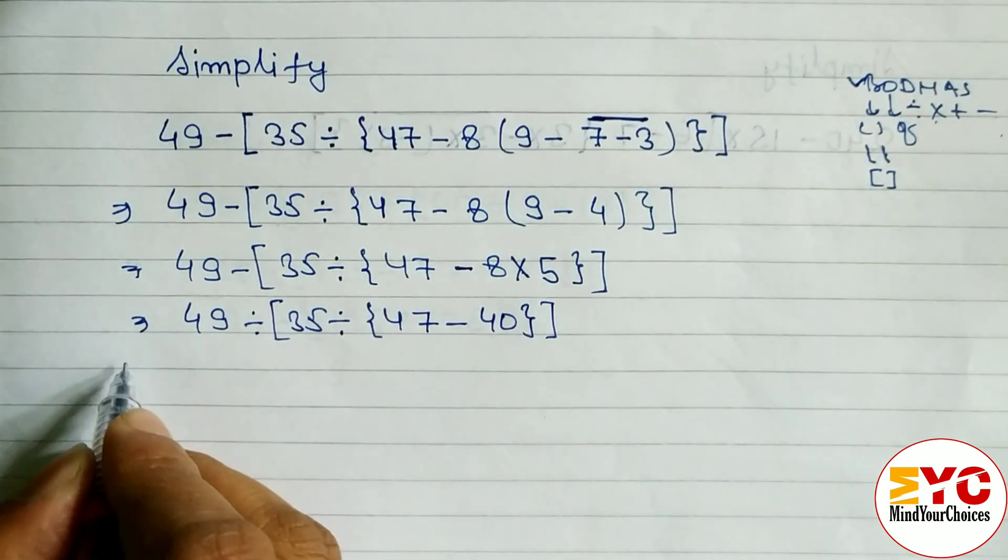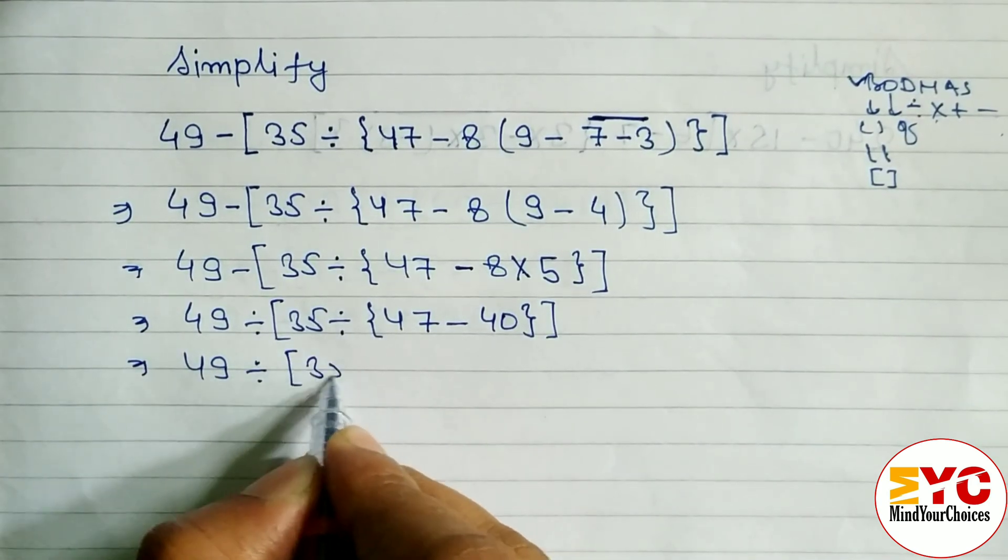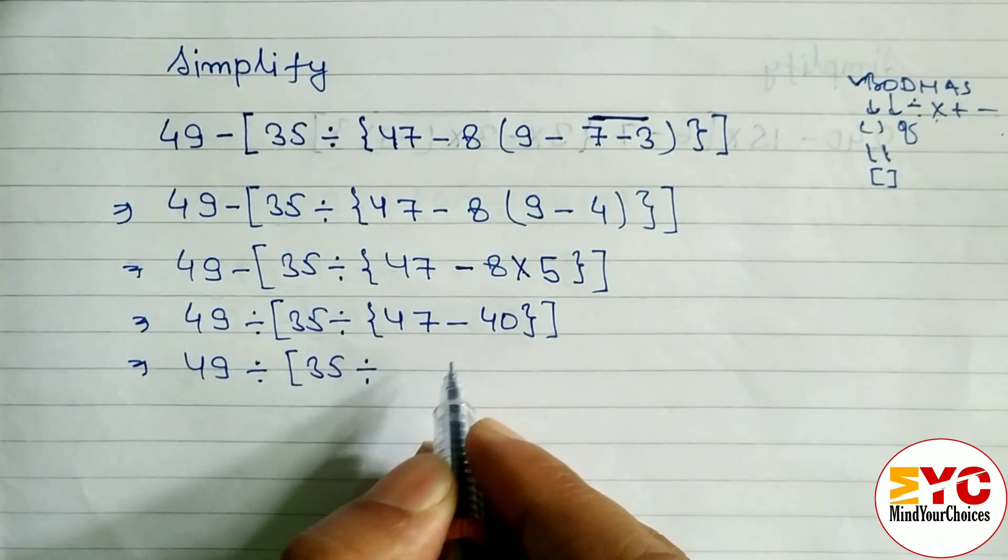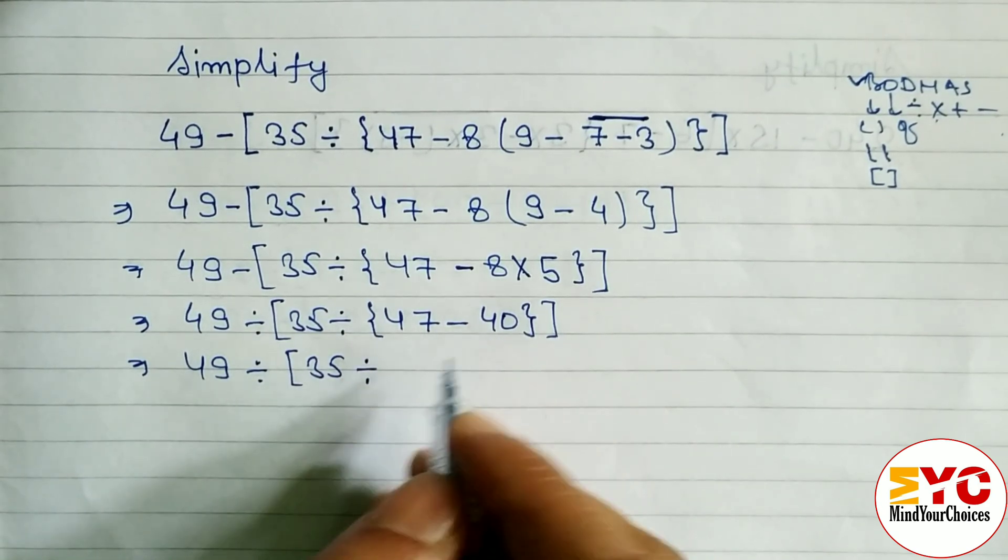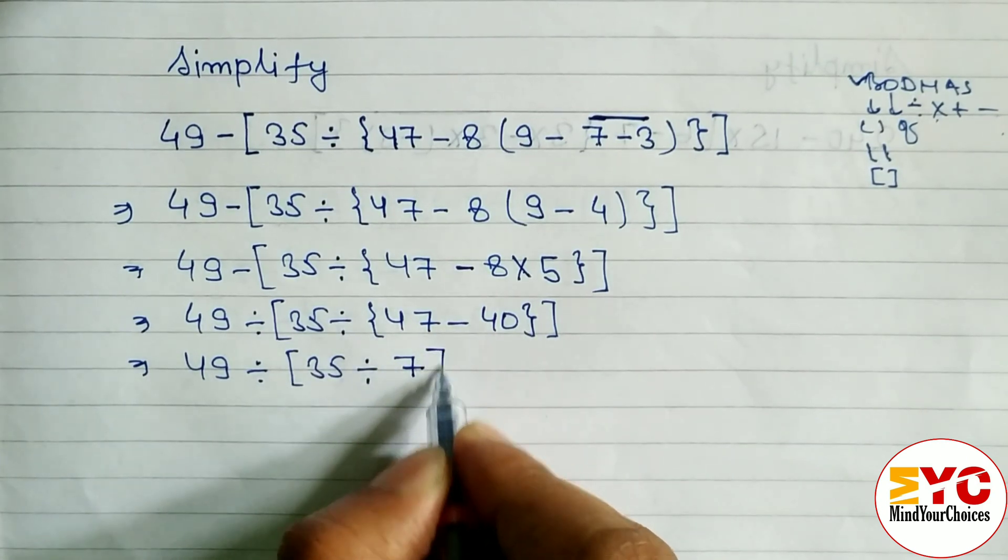After this, 49 divided by, here we have to write 35 divide. Now we have to subtract this: 47 minus 40 we get 7. So write 7. Not necessary to give curly bracket - directly you can give big bracket because these two are already solved.